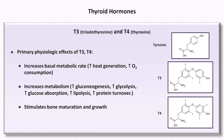Next, they stimulate bone maturation and growth. Their last major effect under normal physiologic conditions is to increase cardiac output by increasing both the heart rate and contractility. You may have noticed that many of the physiological effects of the thyroid hormones are similar to those from the activation of the sympathetic nervous system, and there may be interactions between the two which are not yet understood, explaining why beta blockers are a commonly employed treatment for some manifestations of hyperthyroidism.